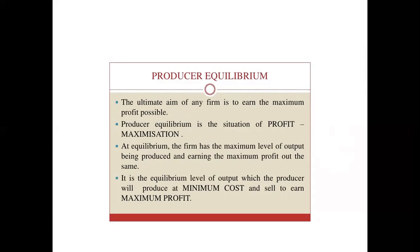The ultimate aim of any firm is to earn maximum profit. Producer equilibrium is the situation of profit maximization. At equilibrium, the firm has the maximum level of output being produced and earns maximum profit. It is the equilibrium level of output at which the producer produces at minimum cost and sells to earn maximum profit. In short, it is the point combining labor and capital along with available cost so that maximum profit can be attained.